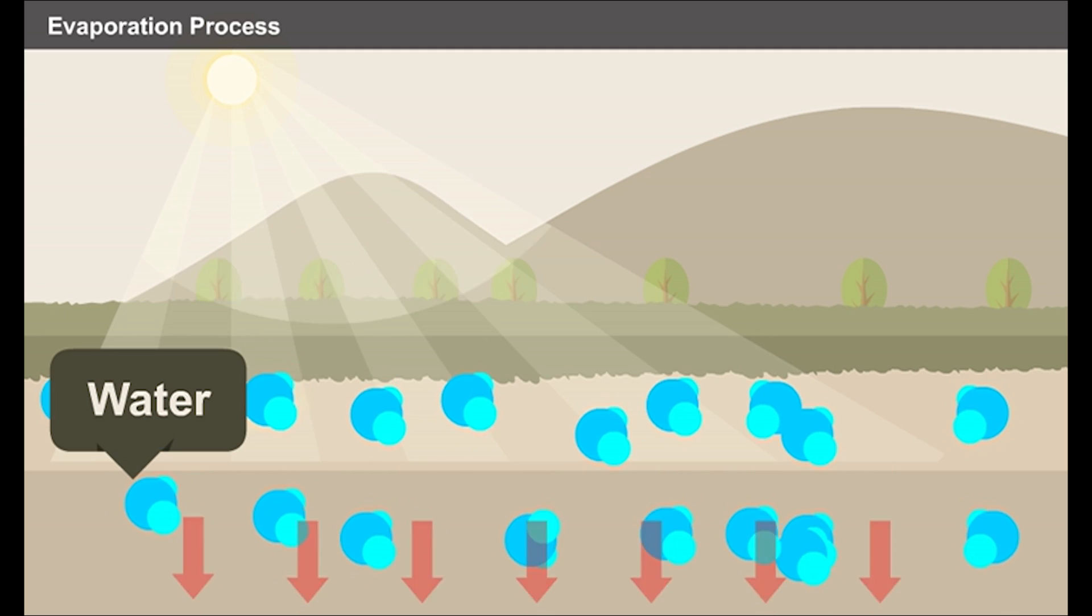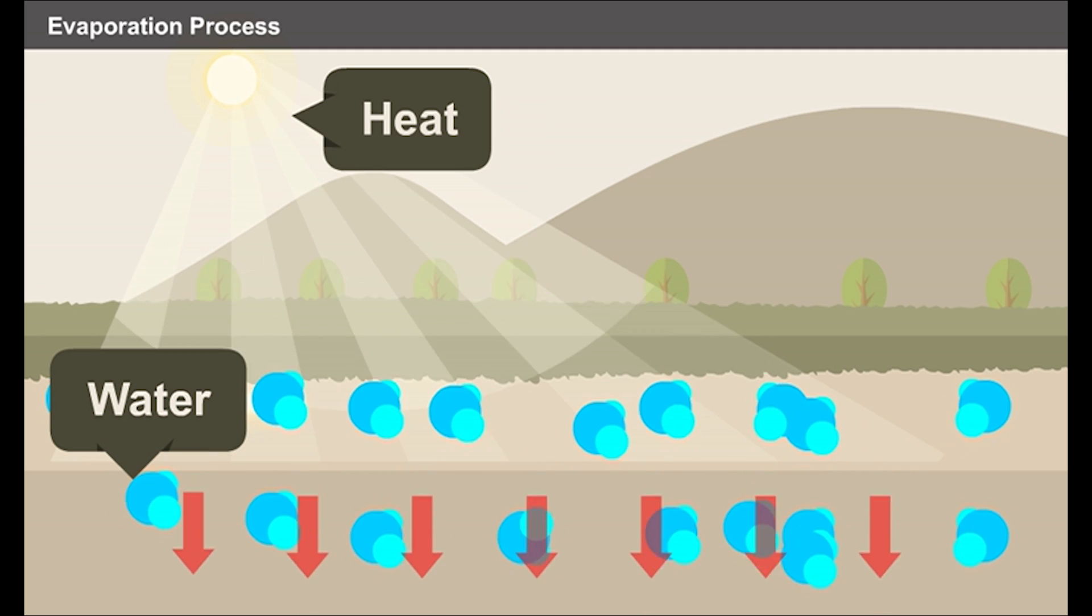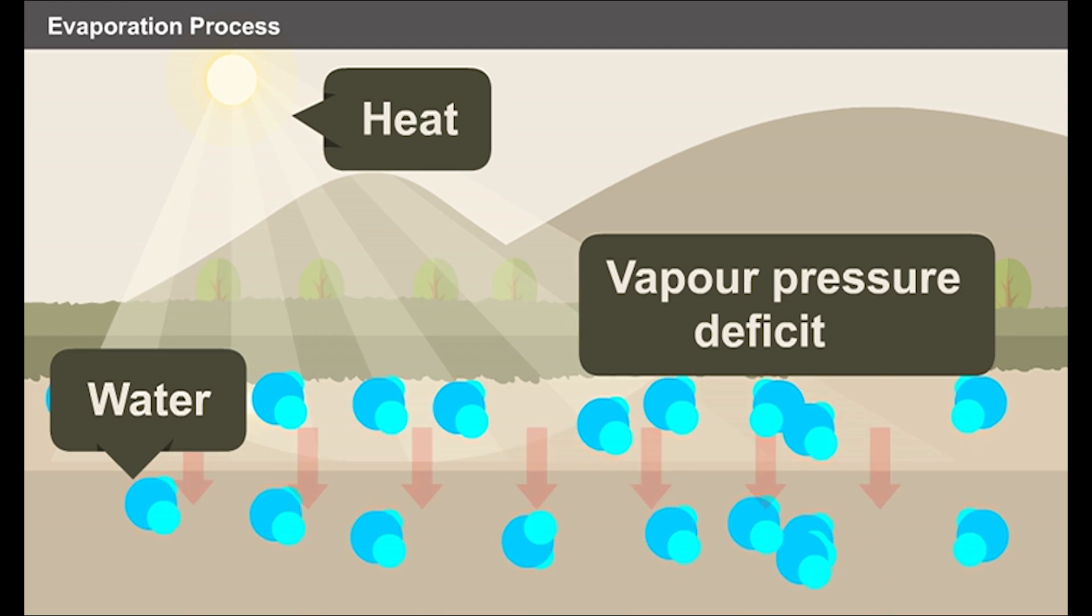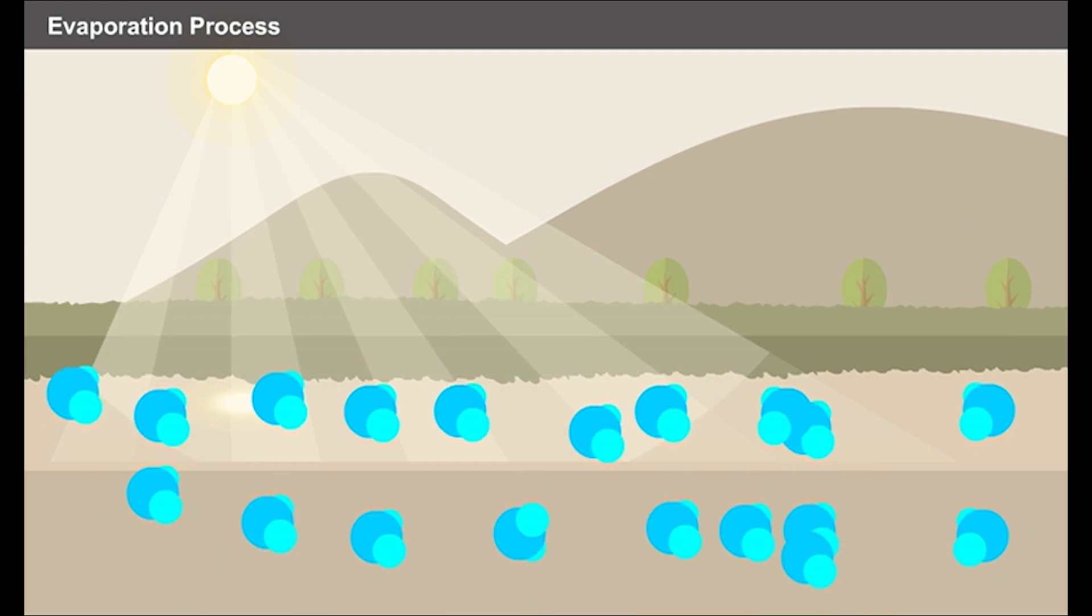Apart from the supply of water, the source of heat and the vapour pressure deficit, the evaporation in an area is influenced by several other factors. Let's discuss those factors in detail.